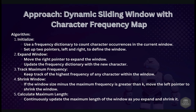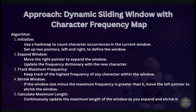The approach is: dynamic sliding window with a character frequency map. We use a hash map to count character occurrences in the current window, because we need to count them to decide what replacements can be made. We use two pointers — left and right — to represent the window boundaries. We expand the window by moving the right pointer and updating the frequency map.